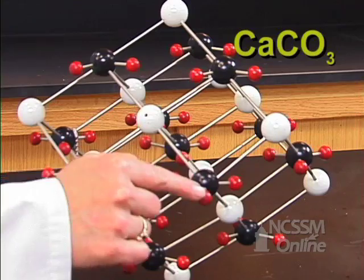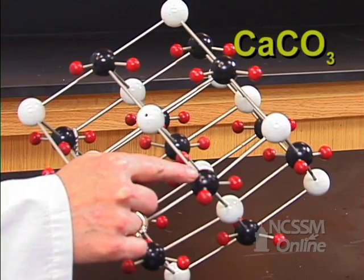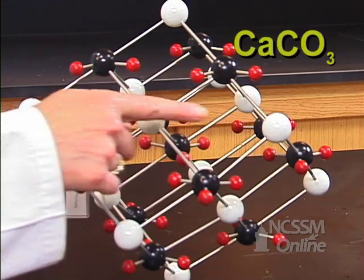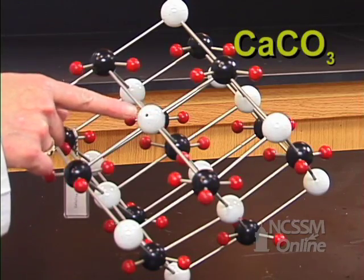Carbon and three oxygens, CO3 two minus, and this is a calcium. So this is calcite or calcium carbonate.